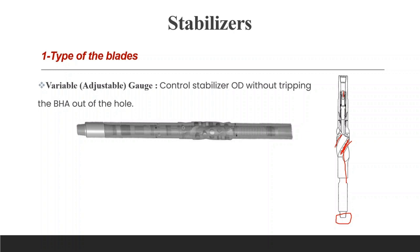The tool remains locked in full gauge position until the flow rate is decreased to the previous reduced value. To deactivate the stabilizer, the flow rate is reduced, which unlocks the tool. Then, picking up off bottom allows the blades to retract to the under-gauge position — essentially reversing the activation process.